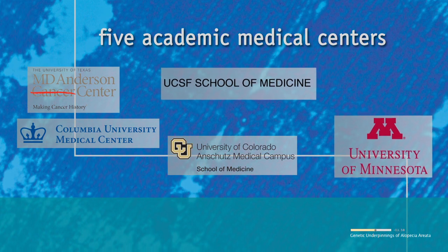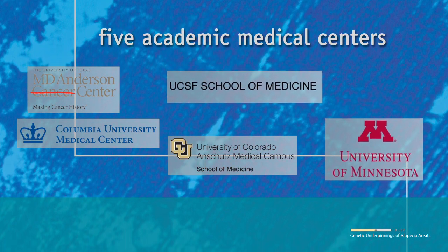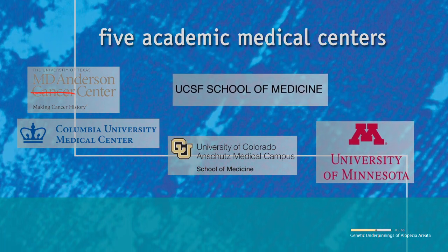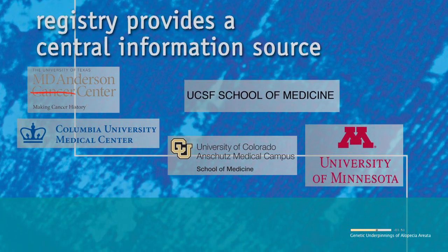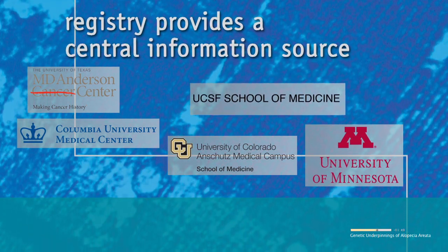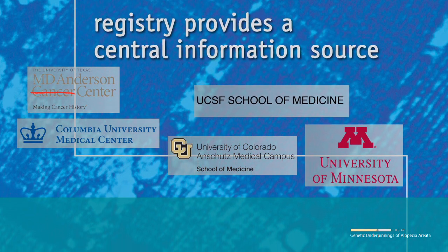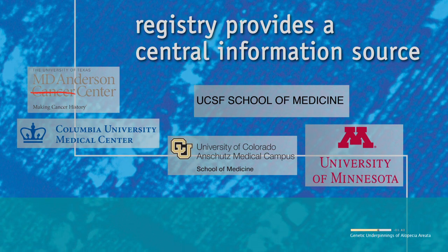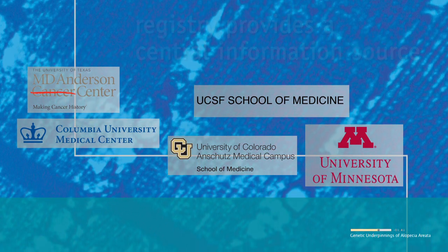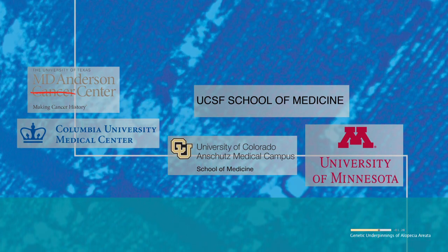and collecting information and blood samples from people with alopecia areata and their family members. The registry provides a central information source where researchers can obtain data associated with the disease. The registry also serves as a liaison between affected families and investigators who study the disorder.